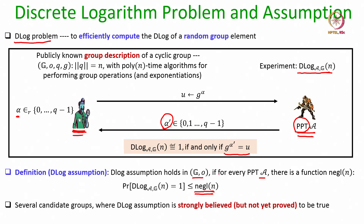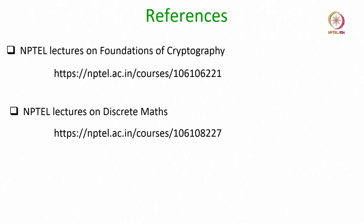There are several candidate cyclic groups where the discrete logarithm is conjectured to be difficult, meaning the D-log assumption holds in those groups — but this is just a conjecture; we do not have any formal proof as of now. Even after many years of effort, no efficient algorithm exists to solve a random instance of the discrete logarithm problem in those groups. With that I end this lecture. You can follow the references — my NPTEL lectures on foundations of cryptography or discrete mathematics — to learn more. Thank you.